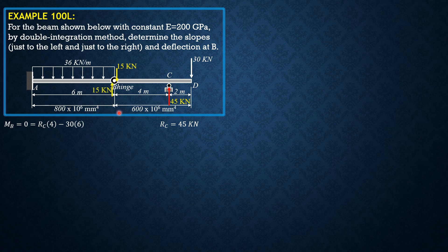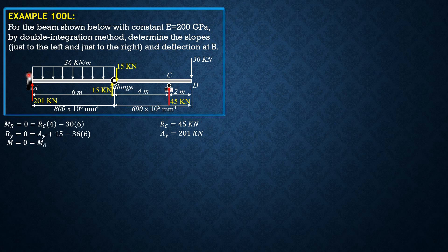Just to the left by action-reaction it's also 15. Considering section AB, summation of forces in Y equals 0: A_Y plus 15 minus 36 times 6 equals 0, so A_Y is equal to 201 kilonewtons. Assuming clockwise moment is positive, moment equals 0: M_A plus 36 times 6 times 3 minus 15 times 6, giving M_A equal to negative 558 kilonewton-meters.